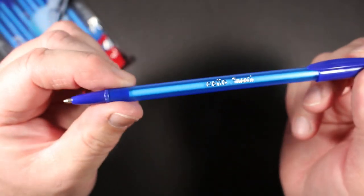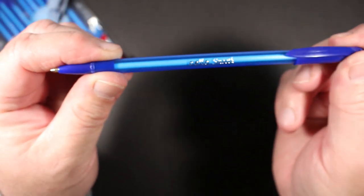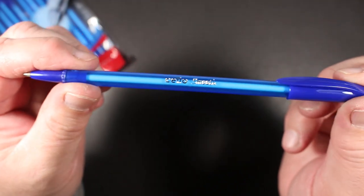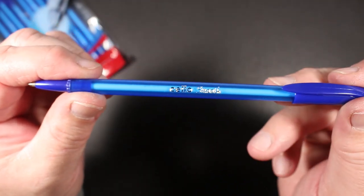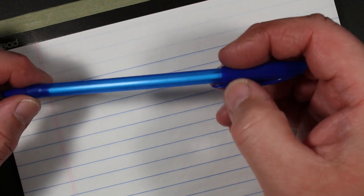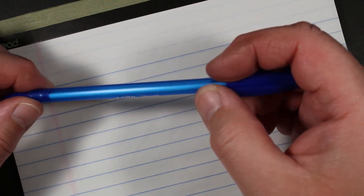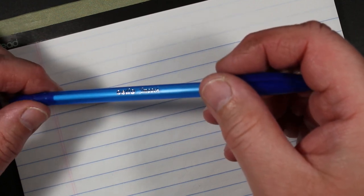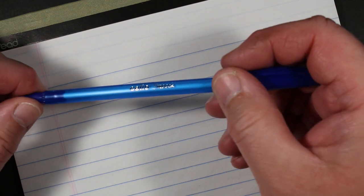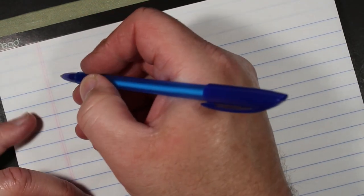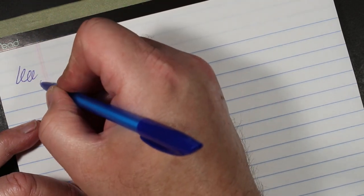And then it has a blue cap at the end. I assume that the cap will post on the end, and it does snugly. So let's get to writing. We have our Cello Smooth medium point 1.0 millimeter pen here made in India. Starts right away.